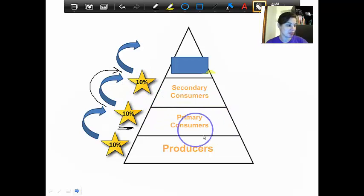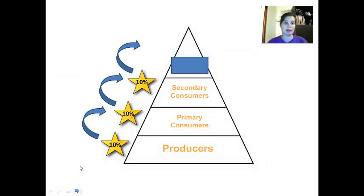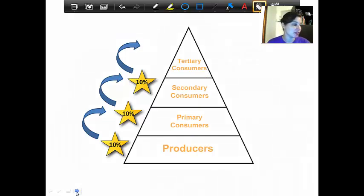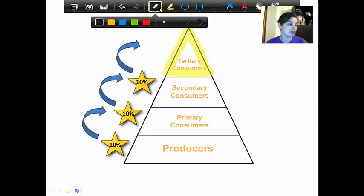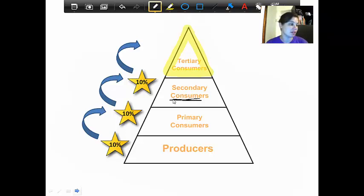Some food webs are done there. We end up with secondary consumers and that's all. But if we would have another level, that would be considered our tertiary consumers. And they, of course, are the smallest of all as far as energy goes. This little pointy section of the energy pyramid is the smallest of all of them. Again, the same reason: only 10% of the energy from the secondary consumers is passed on to our tertiary consumers.